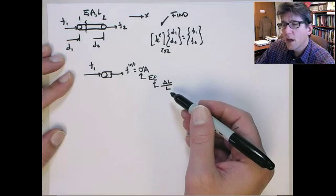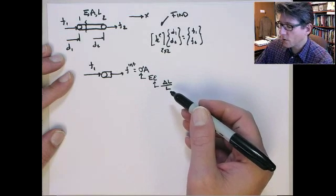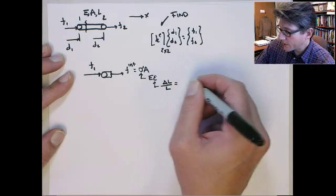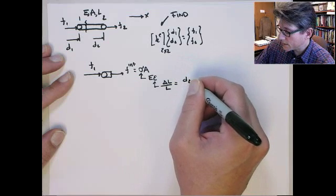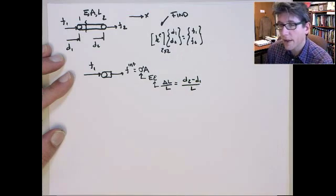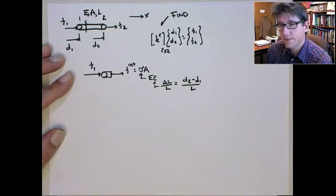We assume this is going to be small deformation, so that doesn't change too much. And then the change in length is simply going to be D2 minus D1 over the length. So that's the strain.